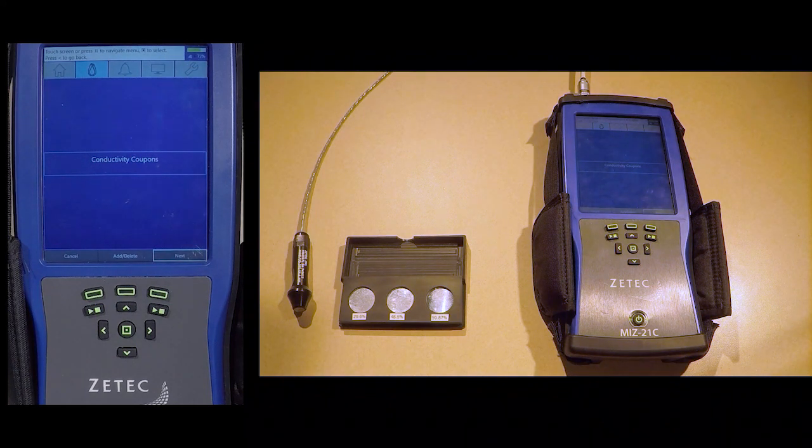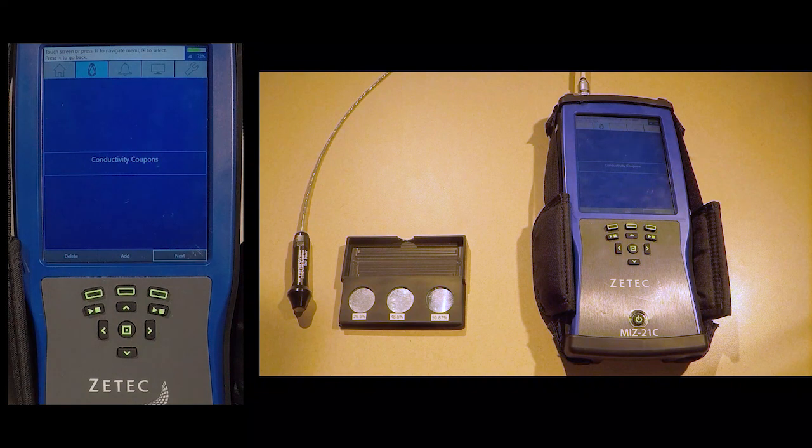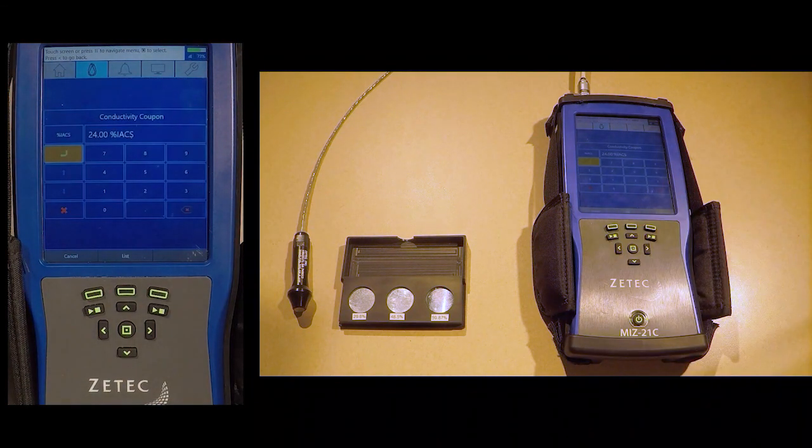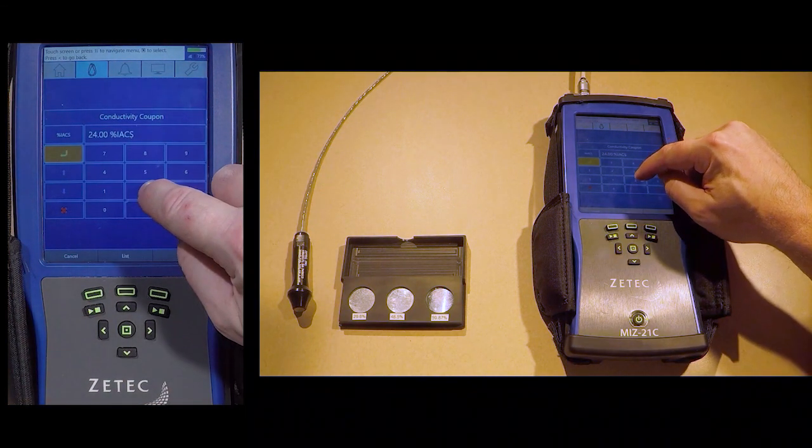The sample being used in this video has two values to be entered. Tap the Add-Delete menu item, then tap Add to enter the first coupon value. We will do this for both coupon values on the standard being used.